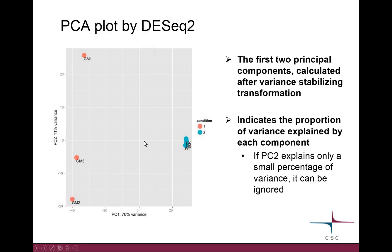Here you can see nicely that group 2 is very much in one clump and group 1 is a bit scattered but still very separable from group 2. So principal component 1 is clearly the explaining factor for the difference between the groups, but there might be something happening on the principal component 2 axis as well. If principal component 2 explains only a very small percentage of variance it can be ignored — now it's 11%, but if it were say 2% it's probably not that important.